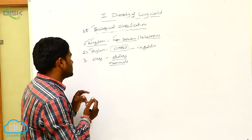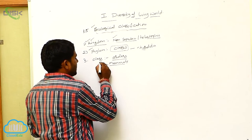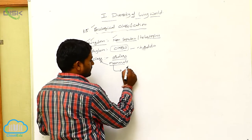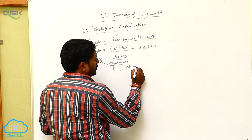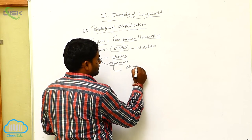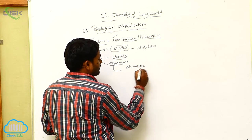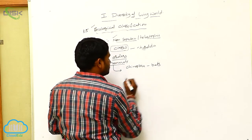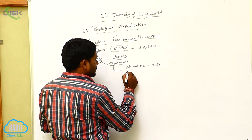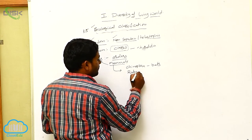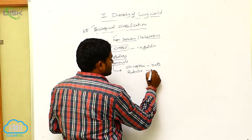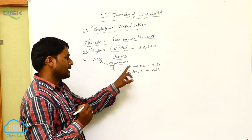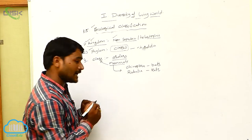In the mammals, if it is a class, mammals have different types of orders. Chiroptera, in which bats are joined. Next one is Rodentia, in which rats are joined. So Chiroptera — bats; Rodentia — rats.